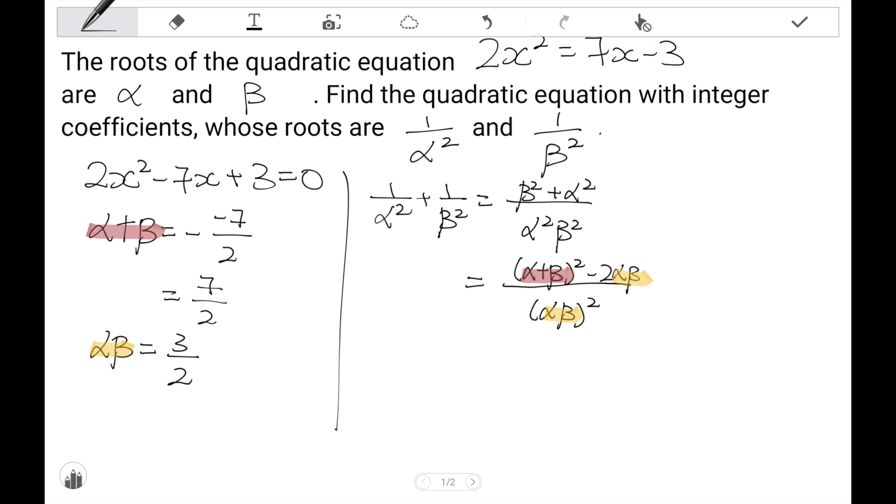So, the next step is easy. I just need to substitute in alpha plus beta. And alpha beta on the top and the bottom. Key this chunk into my calculator and I get my answer as 37 over 9. That was the sum of 1 over alpha squared and 1 over beta squared, slightly longer.